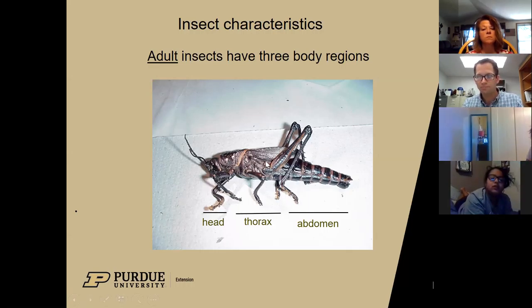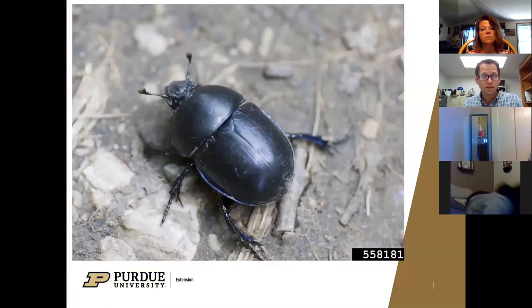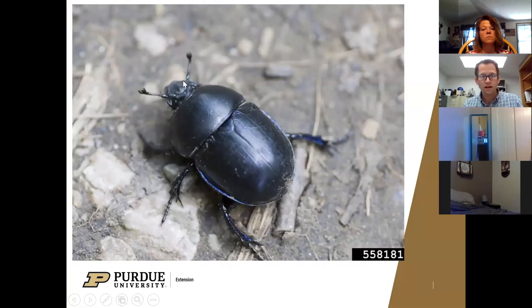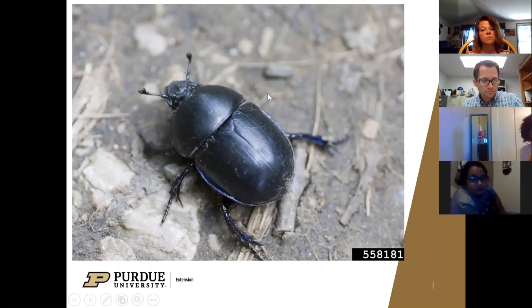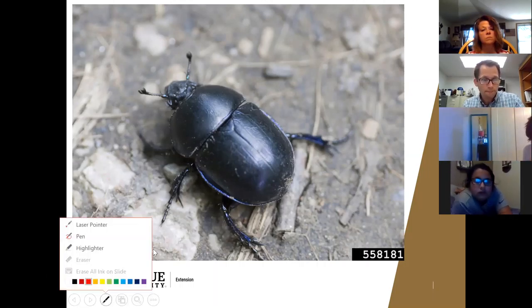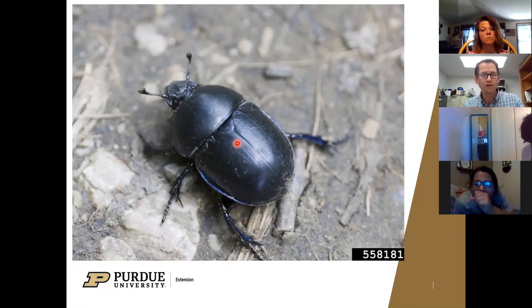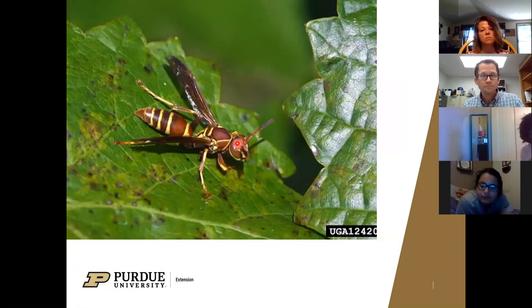Here's an example - a close-up of a beetle. We can see the head here, and then this middle section is the thorax, and then the abdomen there.